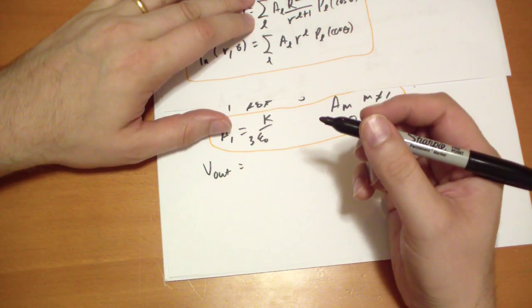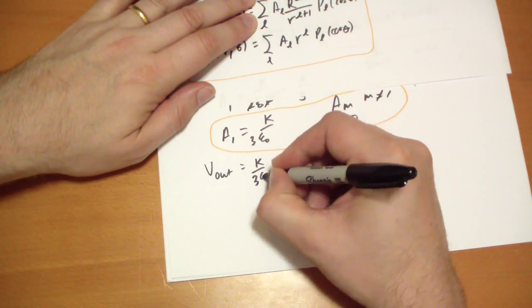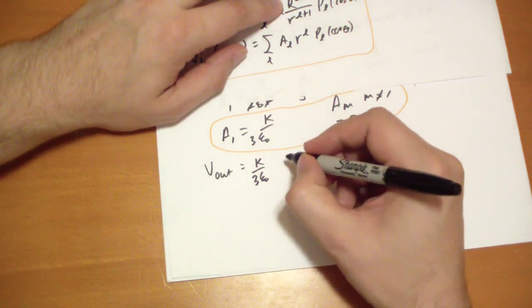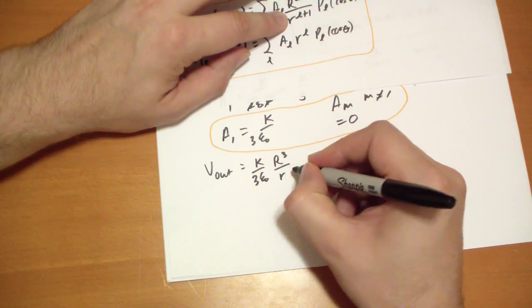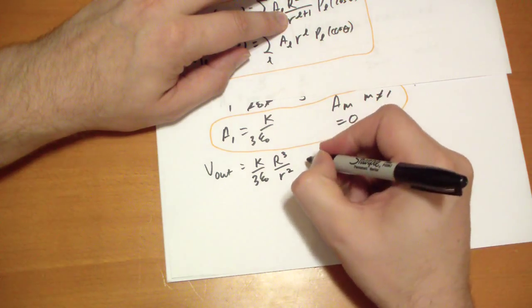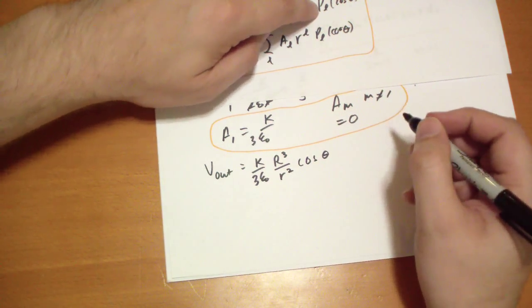So let's plug in the outside potential. So we're going to go sum, but everything is 0 except for the 1 term. So we have a_1, which is k over 3 epsilon-naught. And then r to the 2l plus 1. Well, l is 1, so that's r cubed divided by r to the l plus 1, which is squared, times P_l cos-theta. Well, that's just cos-theta, because it's P_1.